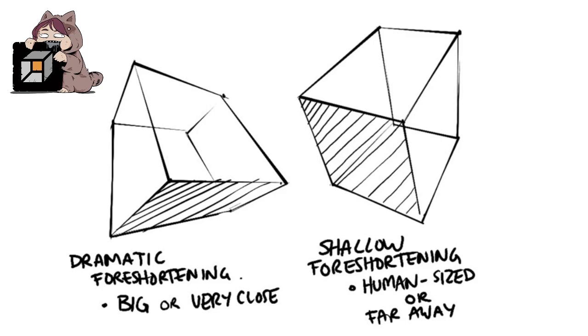So, this to the left, dramatic foreshortening, big or very close, and then to the right, shallow foreshortening, human sized or far away.